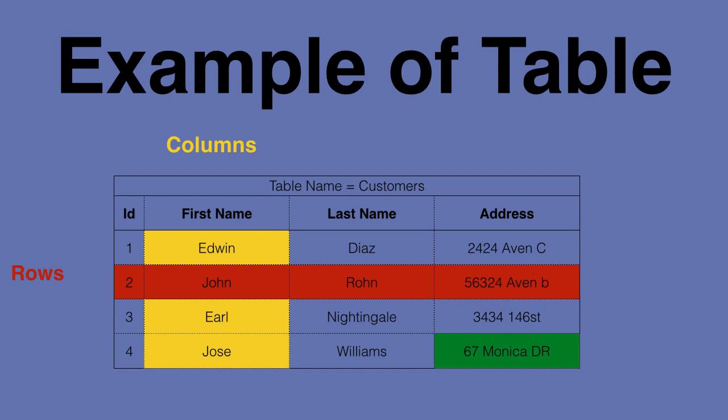As you can see there, I'm highlighting row — the second row with ID number two. That green part that you see there is a field. That would be the intersection between that column and the row.